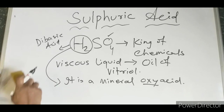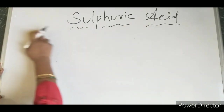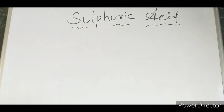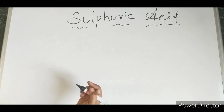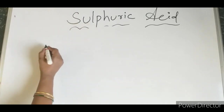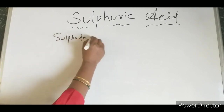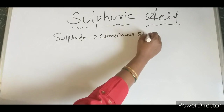Now, for its occurrence: in the free state, it does occur, but at a very low percentage — it can be found in some springs. In the combined state, it is found in the form of sulfates, any sulfate form.